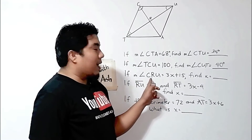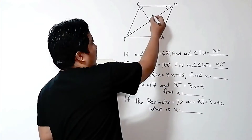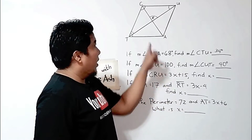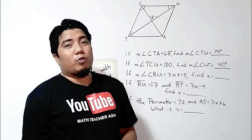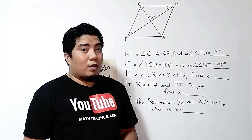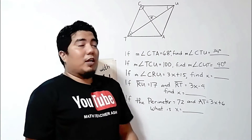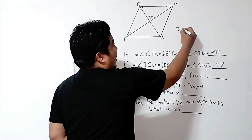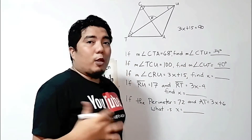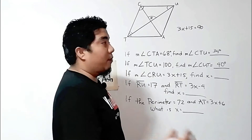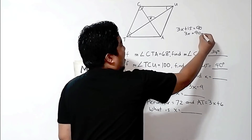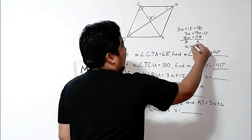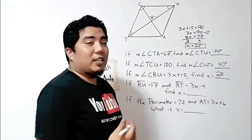The third problem: if the measurement of angle CRU is 3x + 15, find x. One of the properties of a rhombus states that the diagonals are perpendicular with each other. Therefore, since this is a perpendicular line, angle R is 90 degrees. We equate 3x + 15 = 90. Transposing 15: 3x = 90 − 15 = 75. Dividing both sides by 3, the value of x is 25.